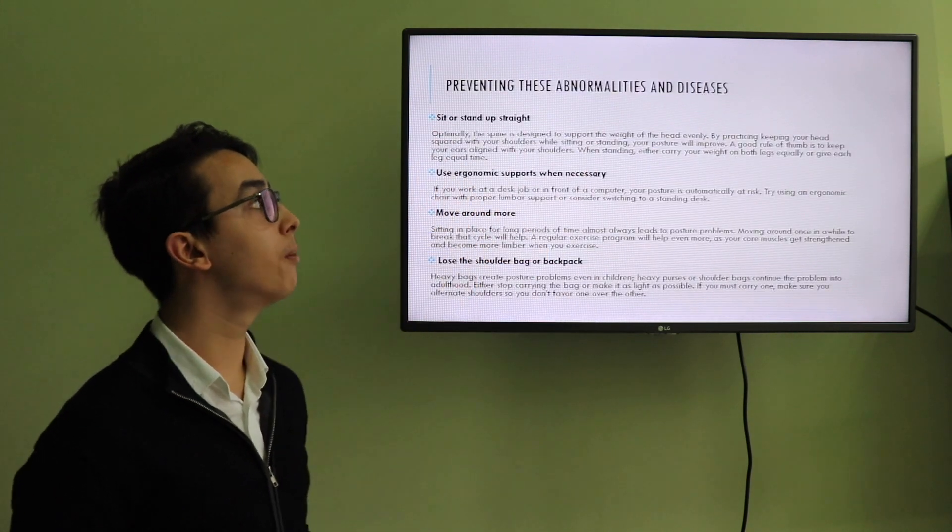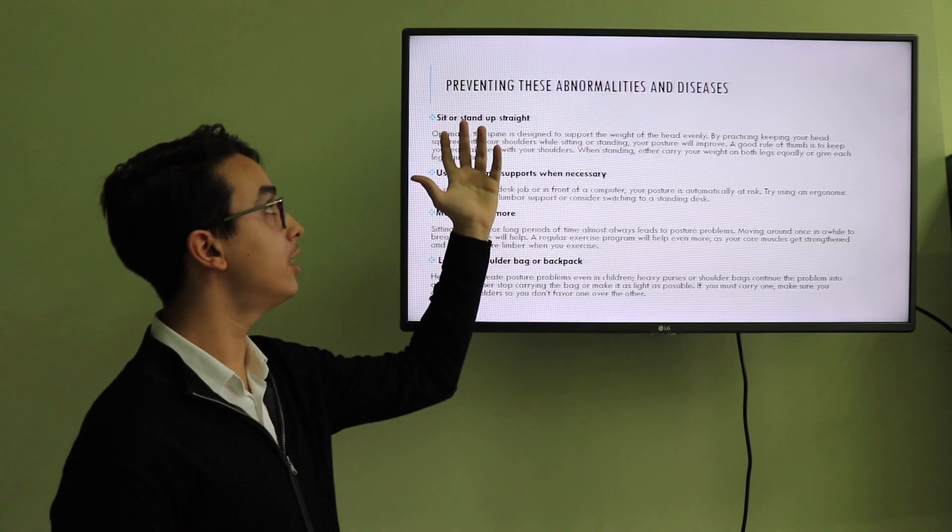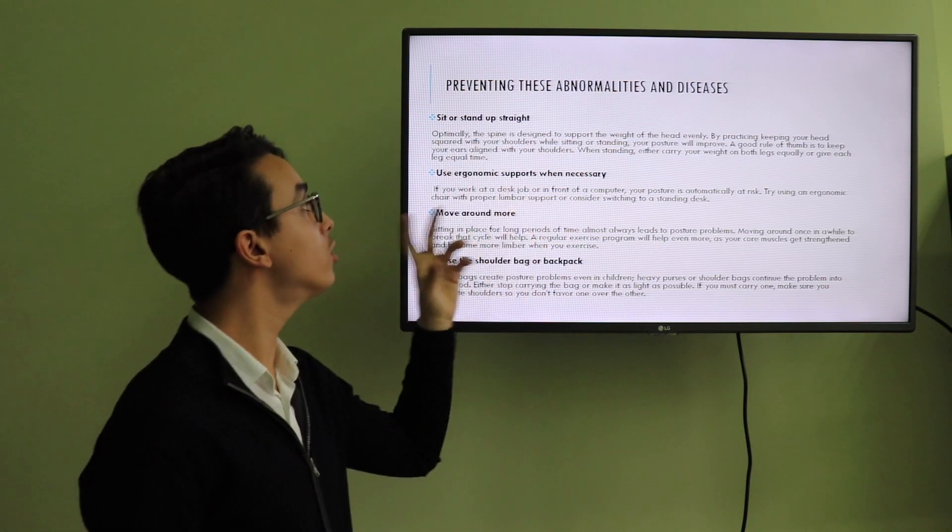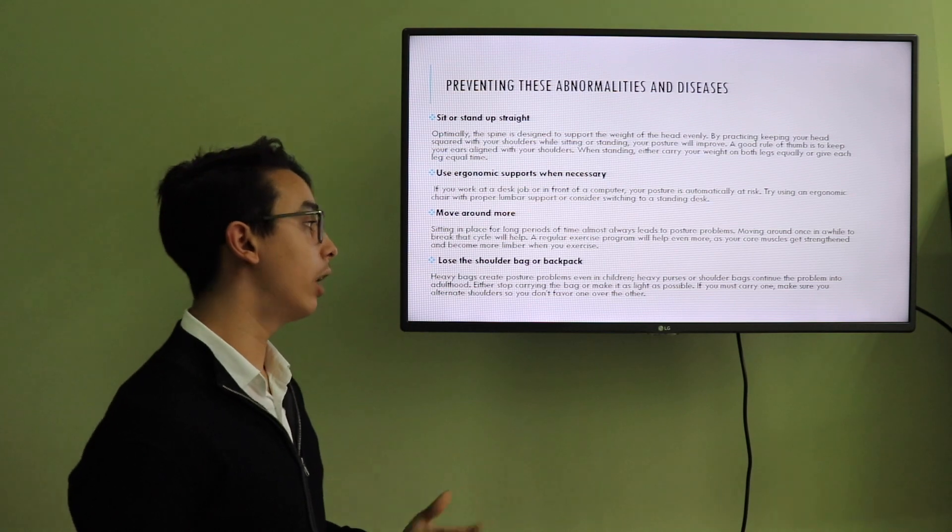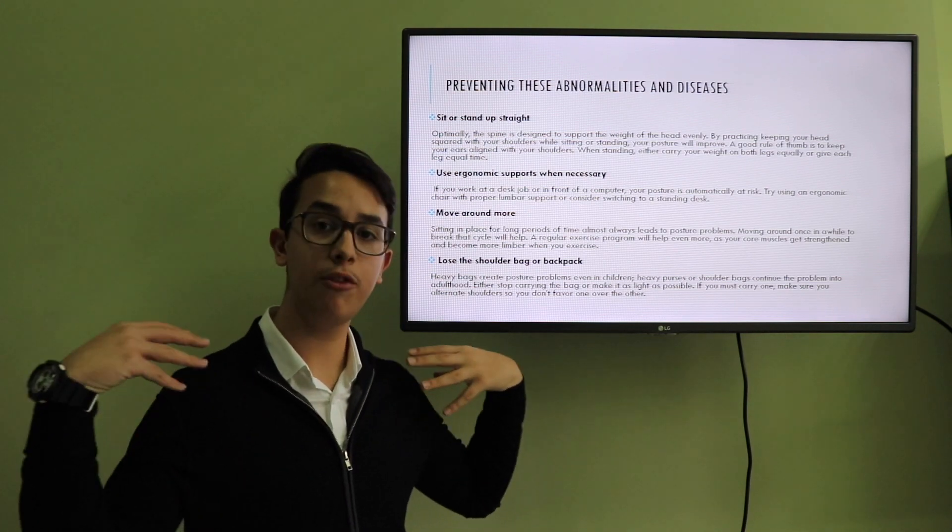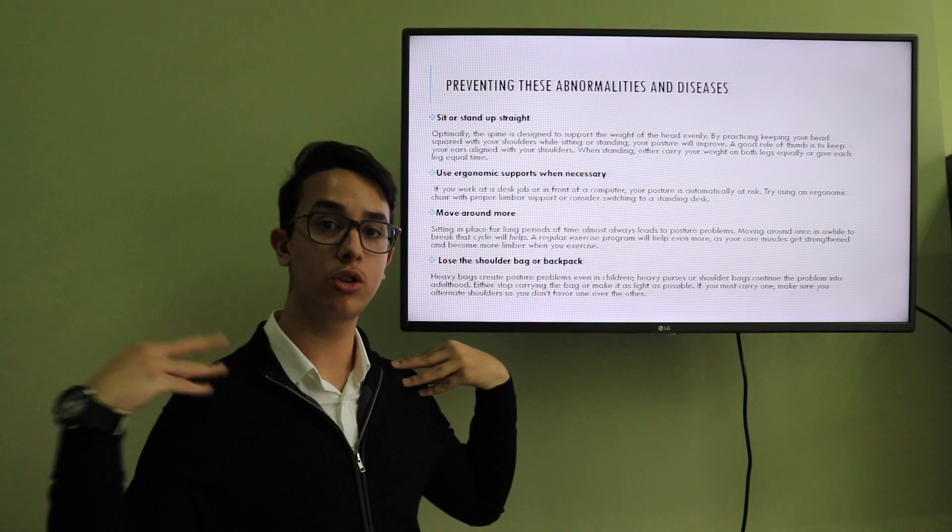These are how to prevent abnormalities and diseases. We can prevent them by sitting or standing up straight, by use of ergonomic supports when necessary, and to move around more. And avoid loading the shoulder or the back by carrying a different amount of weight in both shoulders.